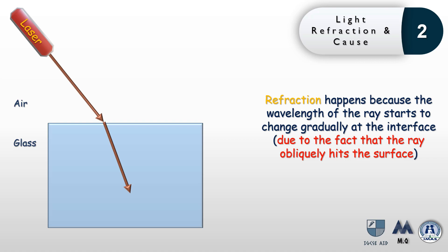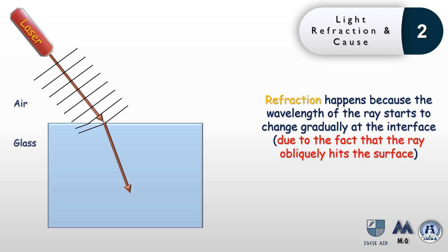As waves travel towards the interface between air and glass, the last wavefront has part of it in air and part already entered glass. The part that enters glass experiences a decrease in wavelength. This means one part of the wavefront is traveling faster than the other, which causes it to deflect. As the wave keeps progressing forward, more of it enters the glass and we get more deflection, until the whole wavefront is in glass and the wave travels in its new path.